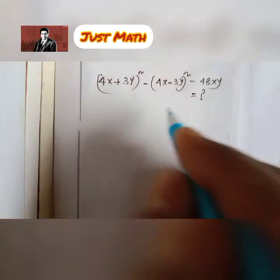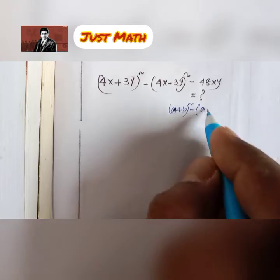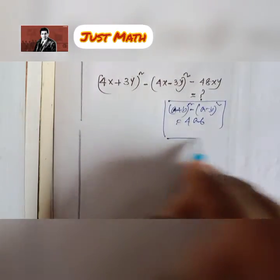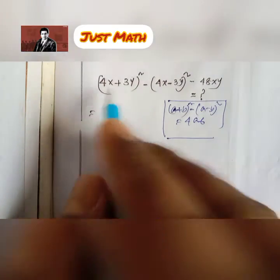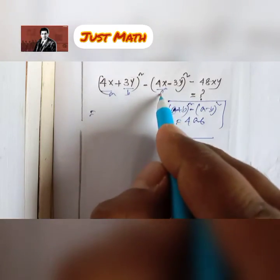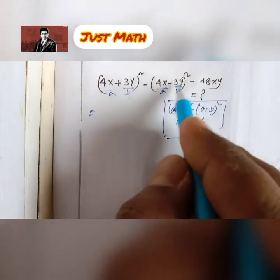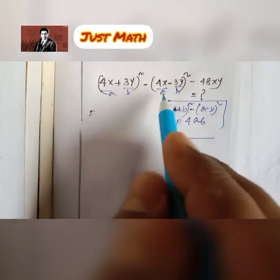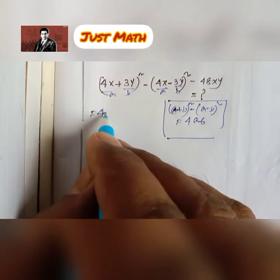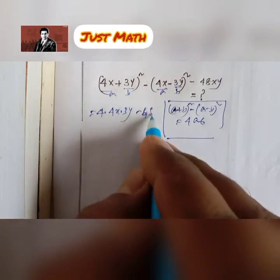We know that (a + b)² minus (a − b)² equals 4ab. So here, (4x + 3y)² minus (4x − 3y)² can be written as 4 multiplied by a multiplied by b, which gives 4 × 4x × 3y, and then we subtract 48xy.